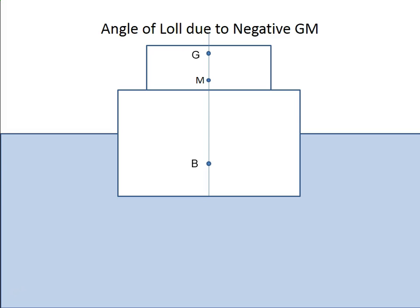Now what we're going to do is we're going to look at loll. You can see right off the bat that loll is actually, with list, we had G below M. But with loll, G is above M. This is negative GM. This is dangerous. And we're going to look at that now. So there's our force of gravity working down, our force of buoyancy working up. I just removed M from the picture again, just to simplify the animation.